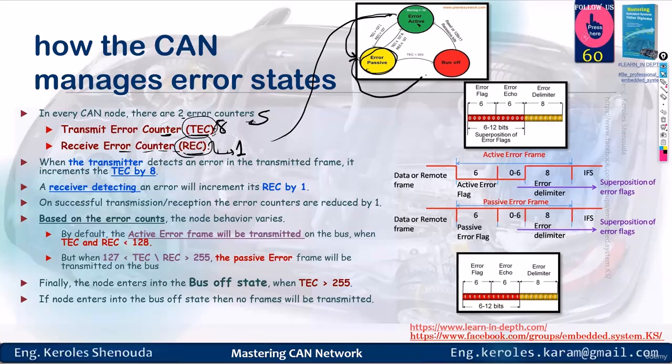If you receive an error, you increase your receive error counter by just once. If afterward what you've sent gets an acknowledgement and everything is running smoothly, you decrease the transmission counter by one. And if you receive something correctly, you decrease the reception counter by one.